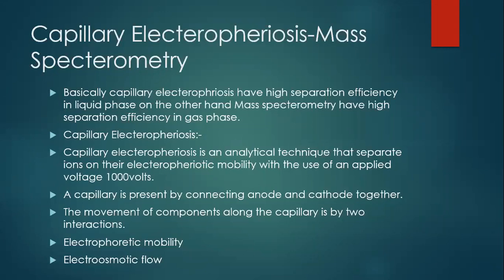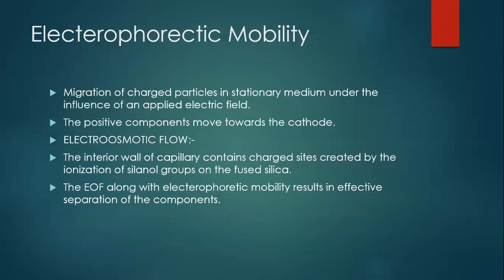The movement of components in capillary electrophoresis depends upon these two factors. Electrophoretic mobility is the migration of charged particles in a stationary medium under the influence of an applied electric field. The positive components move towards the cathode and the negative components move towards the anode.